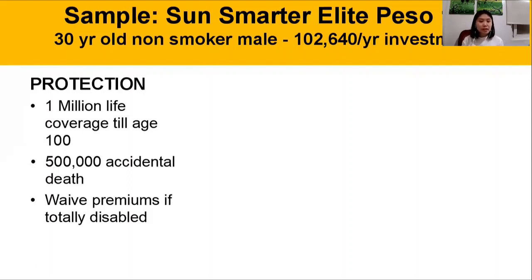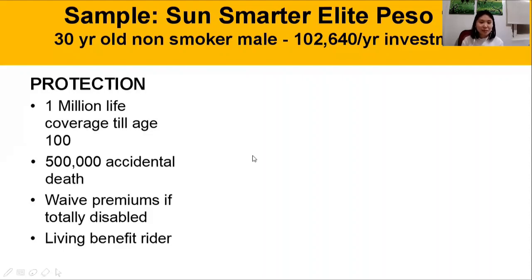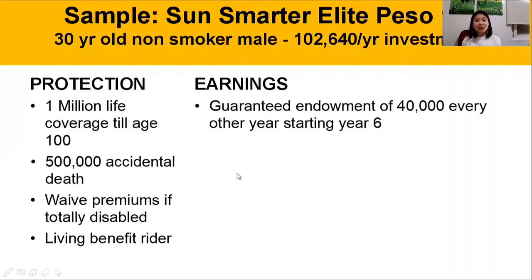Finally, another additional rider you can avail of with this amount of investment is the waiver of premiums in case of total disability. The living benefit rider is always free — it comes free with the plan. So it allows you to advance 60% of the face amount, which is ₱500,000. Our life coverage is double the face amount.